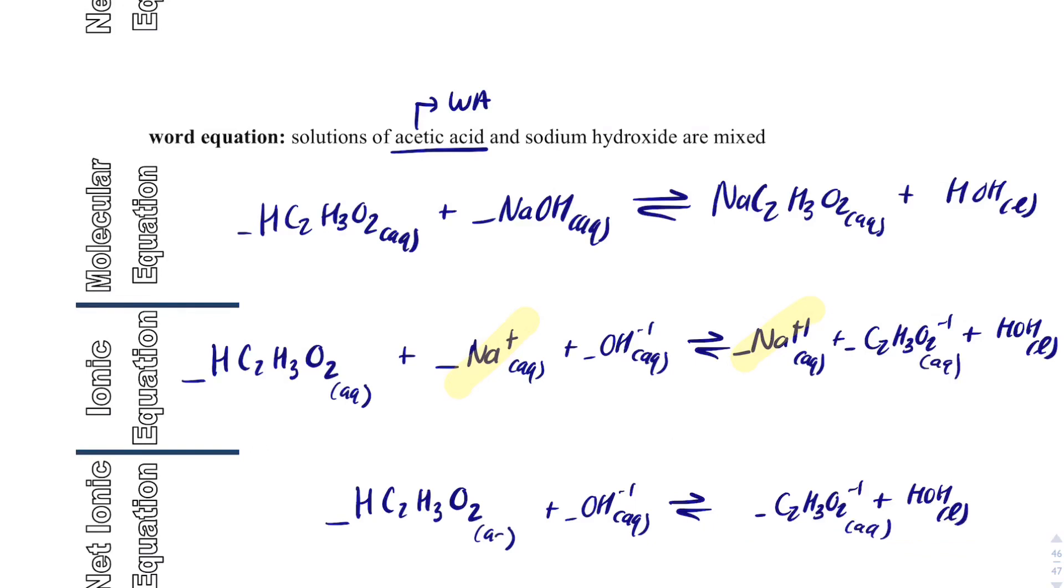So, when you do a net ionic equation where there's an acid involved, you need to make sure that you only break apart strong acids. If it's a weak acid, just keep it together, and that will be the only thing that's aqueous that does not break apart.